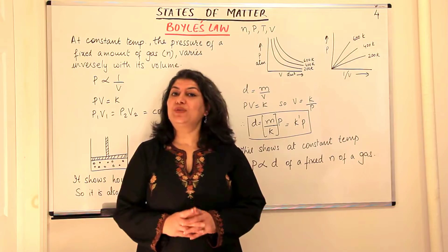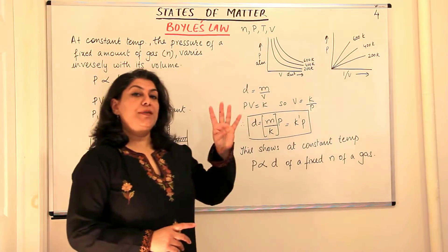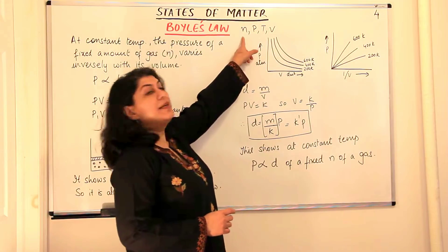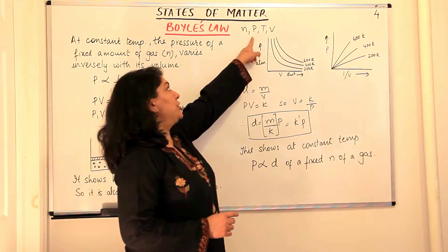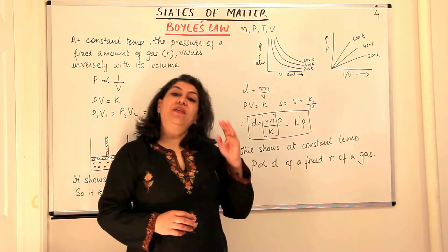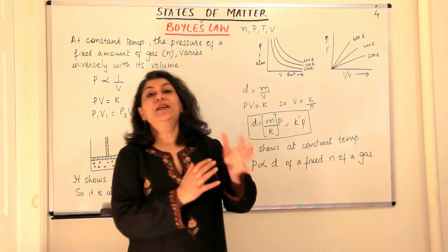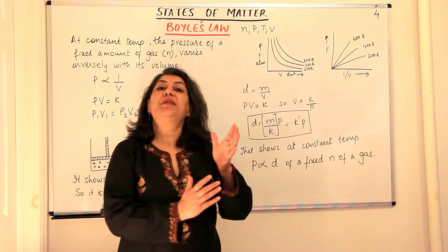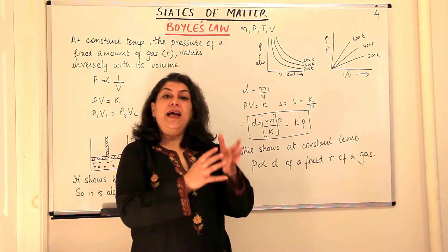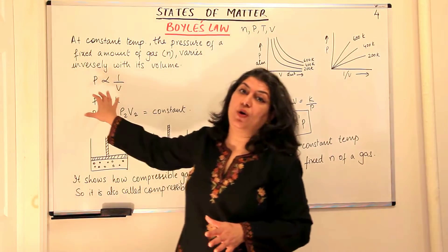As I told you in the previous video, there are four variables in the properties of a gas: the number of moles, pressure, temperature, and volume. When two of these are kept constant, the other two develop a relationship between each other, and this relationship is written in the form of a law.